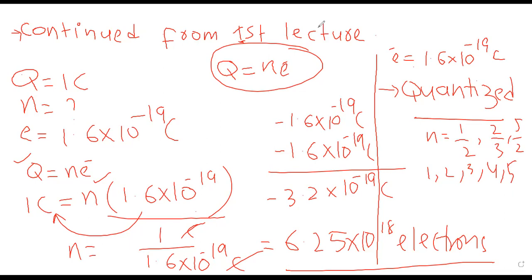I hope you got this concept easily — that n is the number of electrons and this is how we can use this formula. This concept is called the quantization of charge. Remember: quantization of charge means that the charge we get is always in whole numbers. n can be equal to 1, 2, 3, up to infinite numbers. The value of n can never be in a rational fraction form.